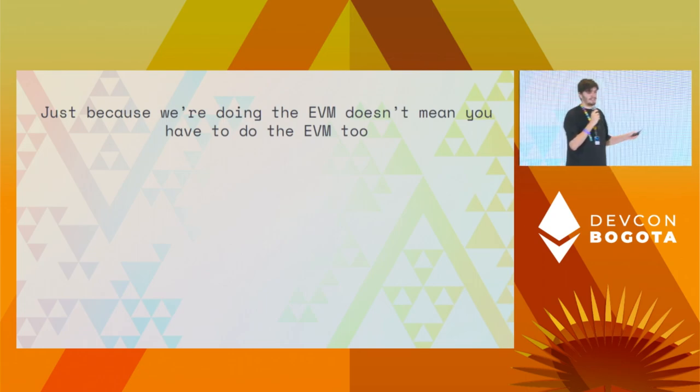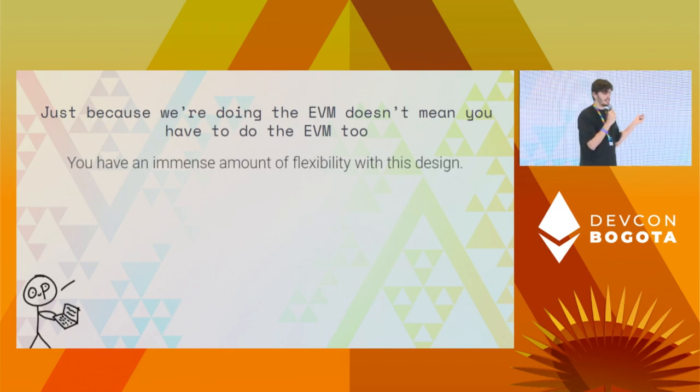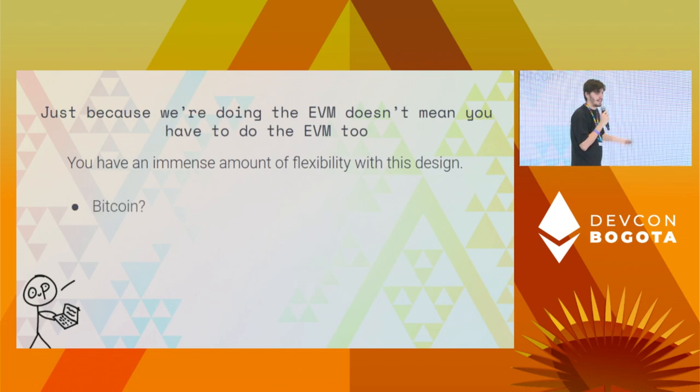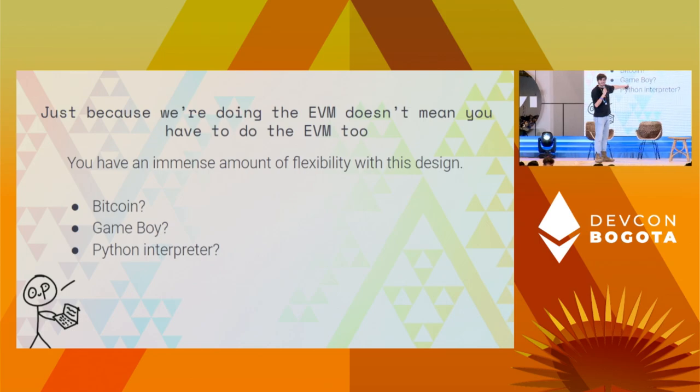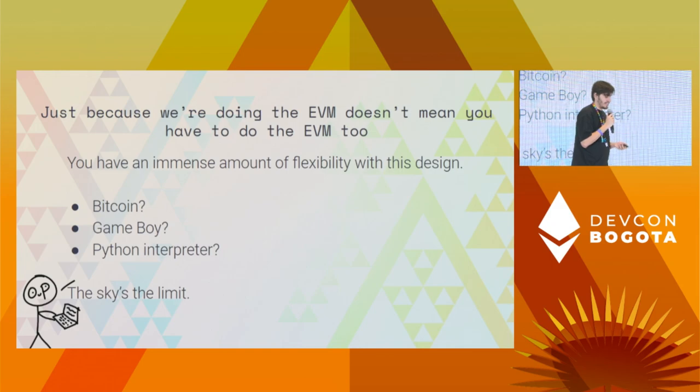Just because we're doing the EVM doesn't mean you have to. This approach is really, really flexible. You can annoy the maxis and do a Bitcoin rollup. You can put a Game Boy inside a rollup. You can do a Python interpreter inside a rollup. As long as you have a state transition function, you can put it behind the engine API and the rest of the system will just work — publishing transactions to Ethereum, the fault-proof system, everything — as long as it compiles to MIPS. Like Carl said, the sky's the limit.